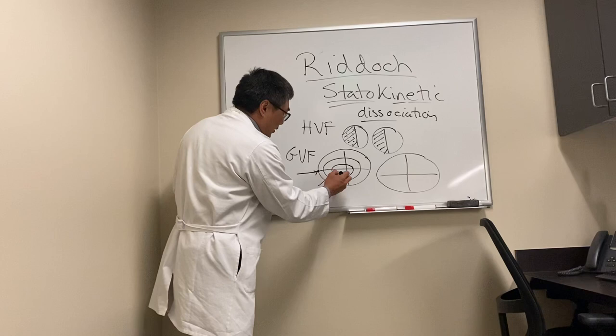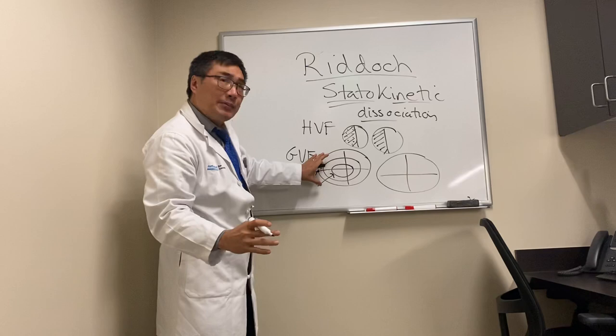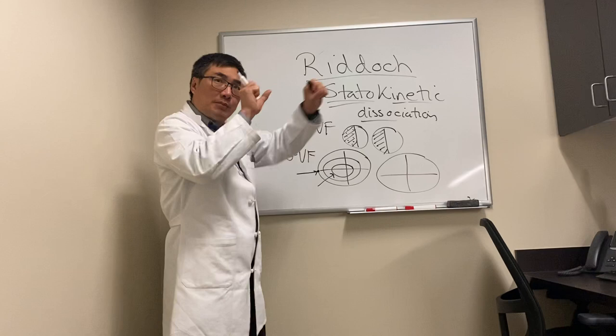The tip of the hill being the fovea, and then the various rings representing different sizes of the stimuli. So these are brought in kinetically, versus Humphrey, where the lights are presented statically in the same location.